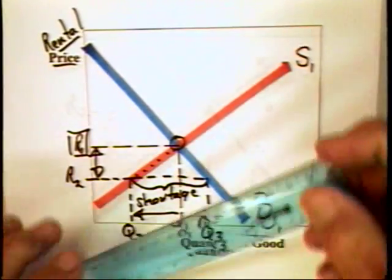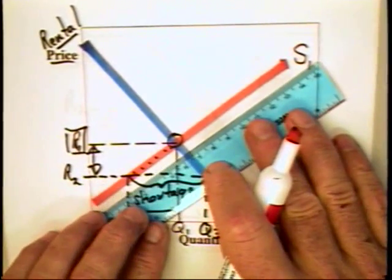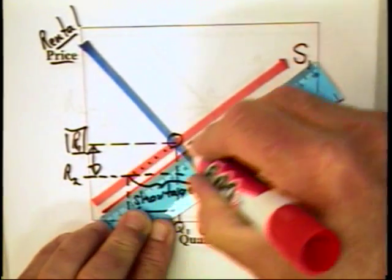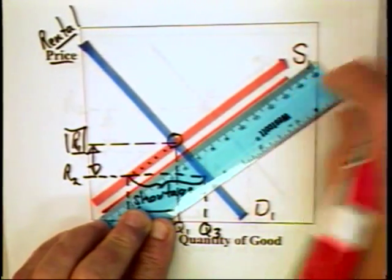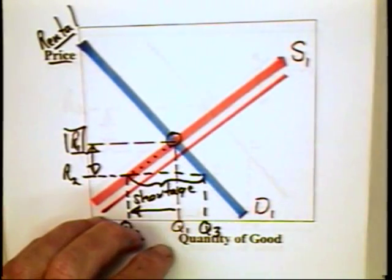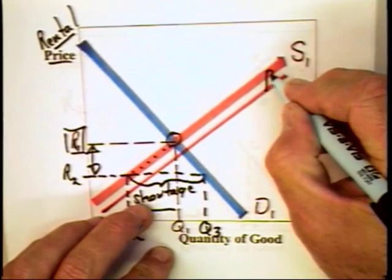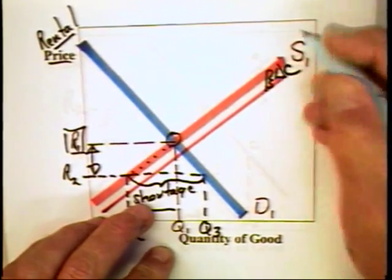And when they cut out some of the maintenance, they can reduce their costs. And they might reduce their costs by this amount. If they reduce their costs by that amount, they can be better off to that extent.